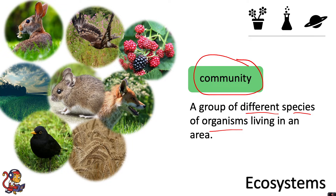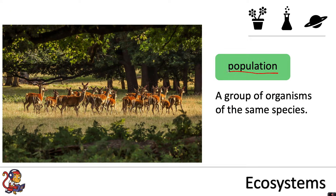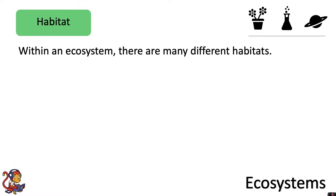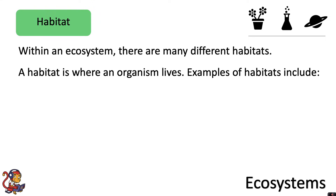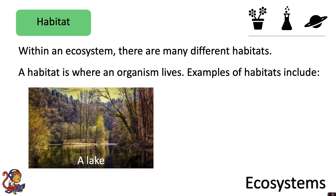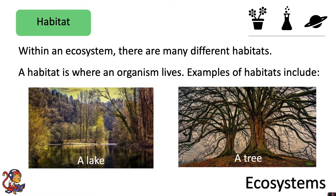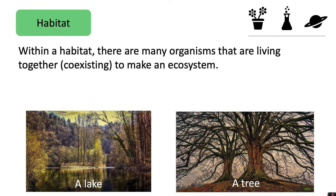It could be that you want to focus on a particular species, in which case you might want to study a population, because a population is a group of organisms of the same species. So this group of deer here you would call a population of deer because they are all the same species. Within an ecosystem there are many different habitats. A habitat is where an organism lives — examples include a lake or a tree. Within a habitat there are many organisms living together, which we call coexisting, to make up an ecosystem.